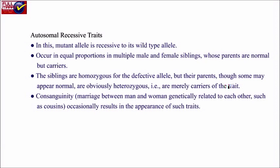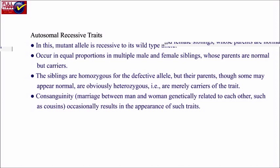Autosomal recessive trait: The mutant allele is recessive to its wild-type allele. It occurs in equal proportion in male and female siblings whose parents are not affected but are carriers. The siblings are homozygous for the defective allele, but their parents, though appearing normal, are heterozygous carriers of the trait. Consanguinity refers to marriage between a man and woman who are genetically related to each other.